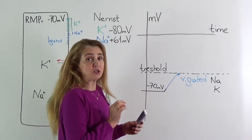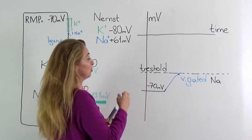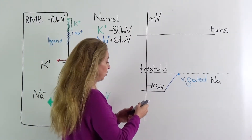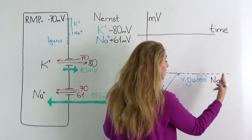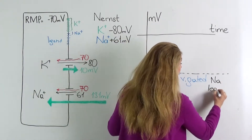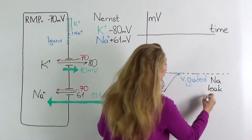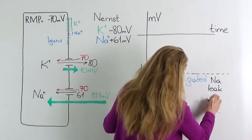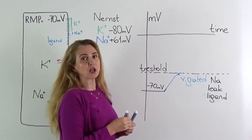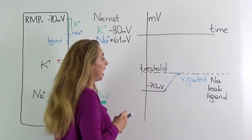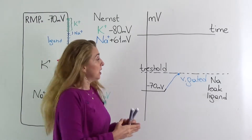The first voltage-gated channel to open is the voltage-gated sodium channel. When voltage-gated sodium channels open, the channels present include: leak channels for sodium, which are always open; ligand or mechanically gated channels, through which more sodium can enter; and additionally, voltage-gated sodium channels. We now have a very large number of channels letting sodium into the cell.